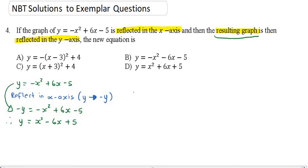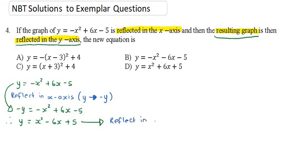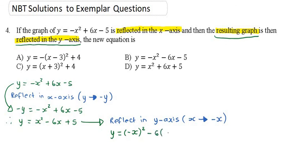Now, what are we doing with this resulting equation? It's going to be reflected in the y-axis. I'm taking this equation and now reflecting in the y-axis. According to the rules, x will become a minus x. So if I do that, let's write it over here: y equals, and then all the x's must become minus x's — so minus x squared minus 6 times minus x plus 5.